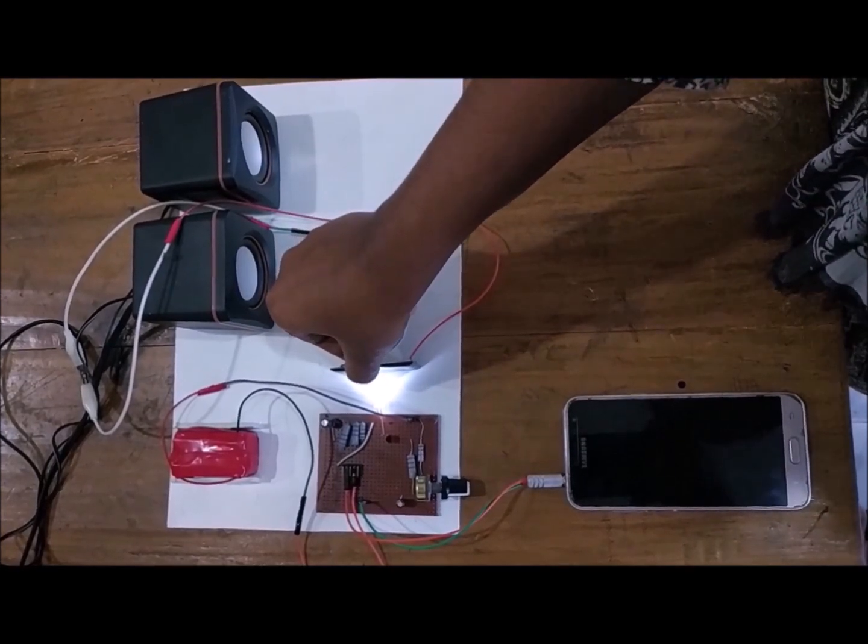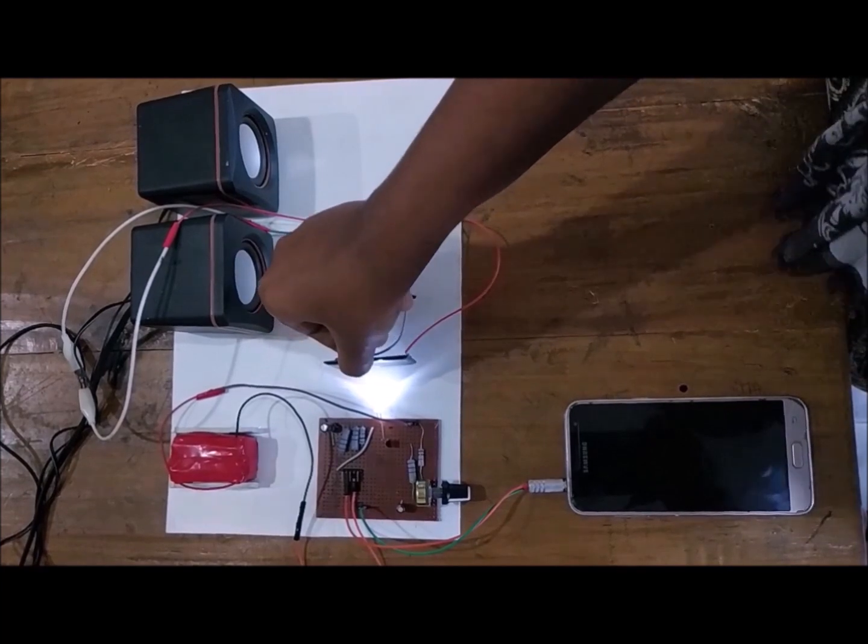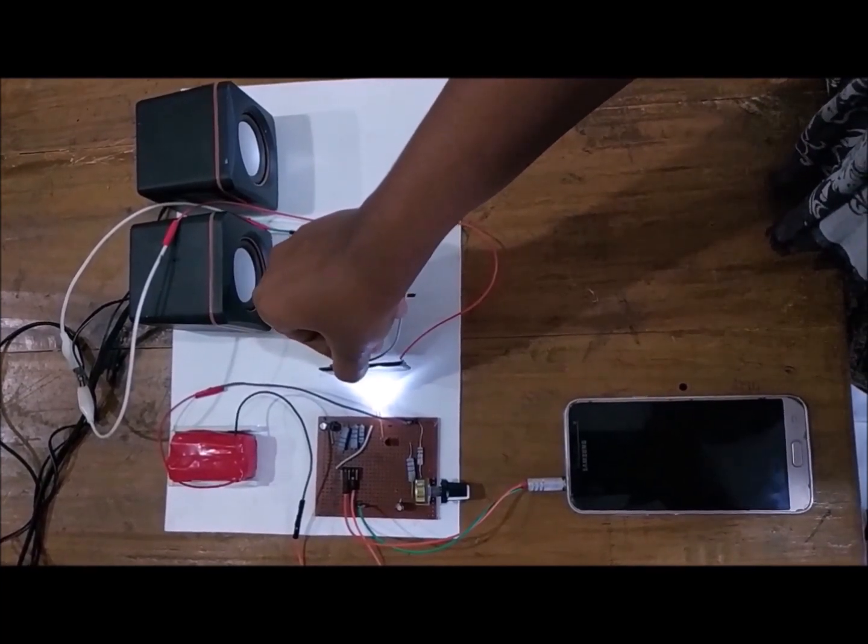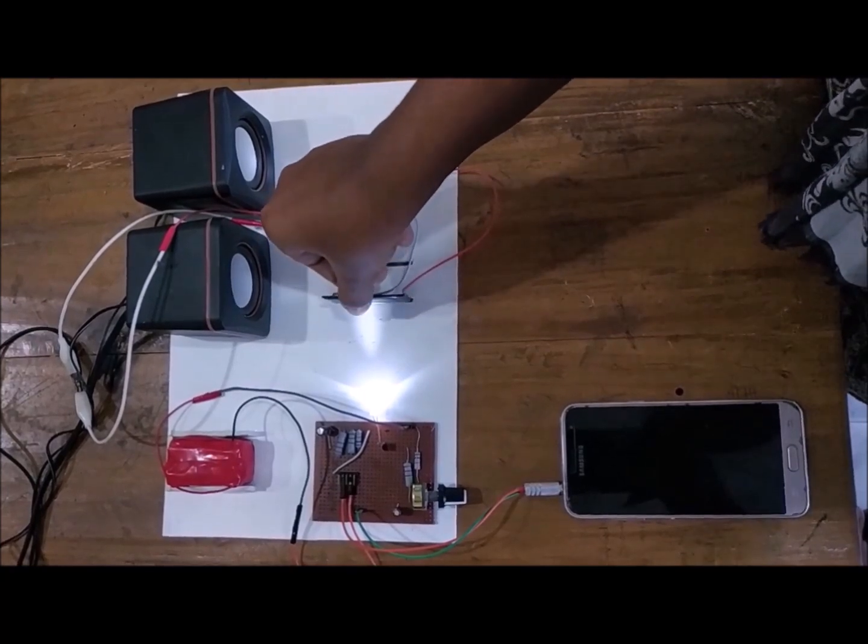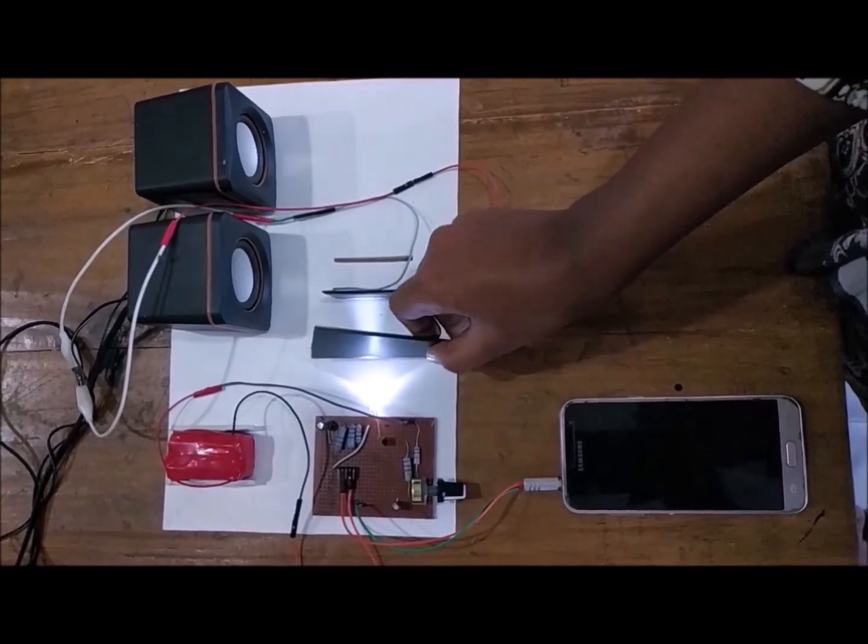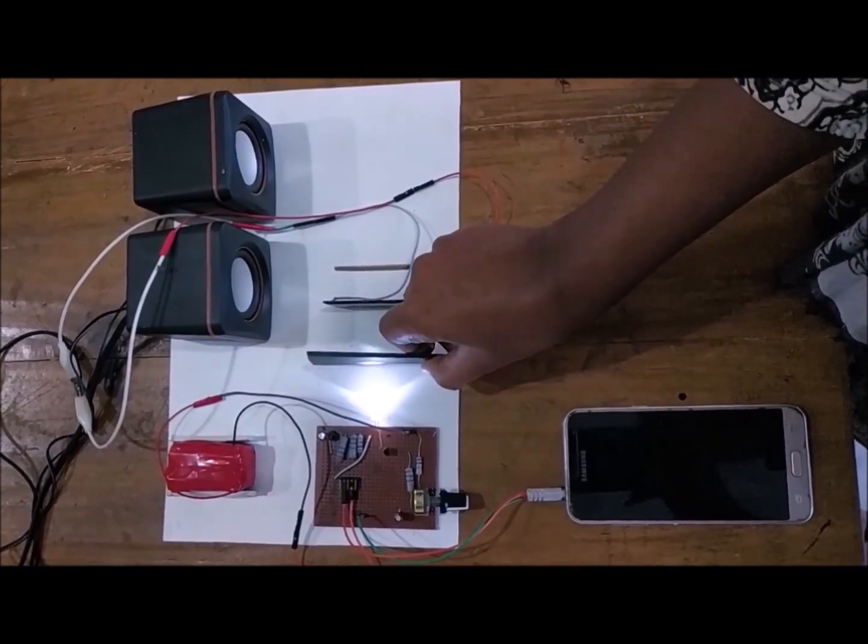Now we can check the process by blocking this carrier wave. If we block this carrier wave, we can see there is no output.